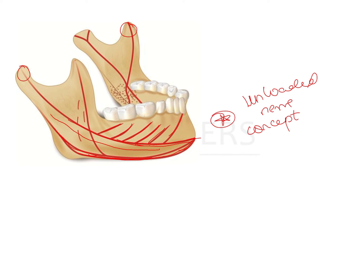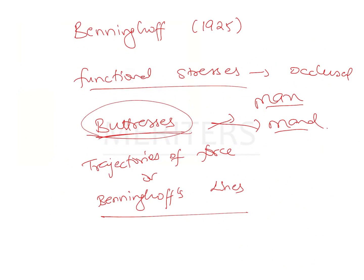Another trajectory pattern near the symphysis comes from the gonial angle, running downward from the coronoid process through the gonion into the ramus and body of the mandible. These are accessory trajectories of force, possibly due to the direct attachment of muscles of mastication, which causes thickening of the bone.